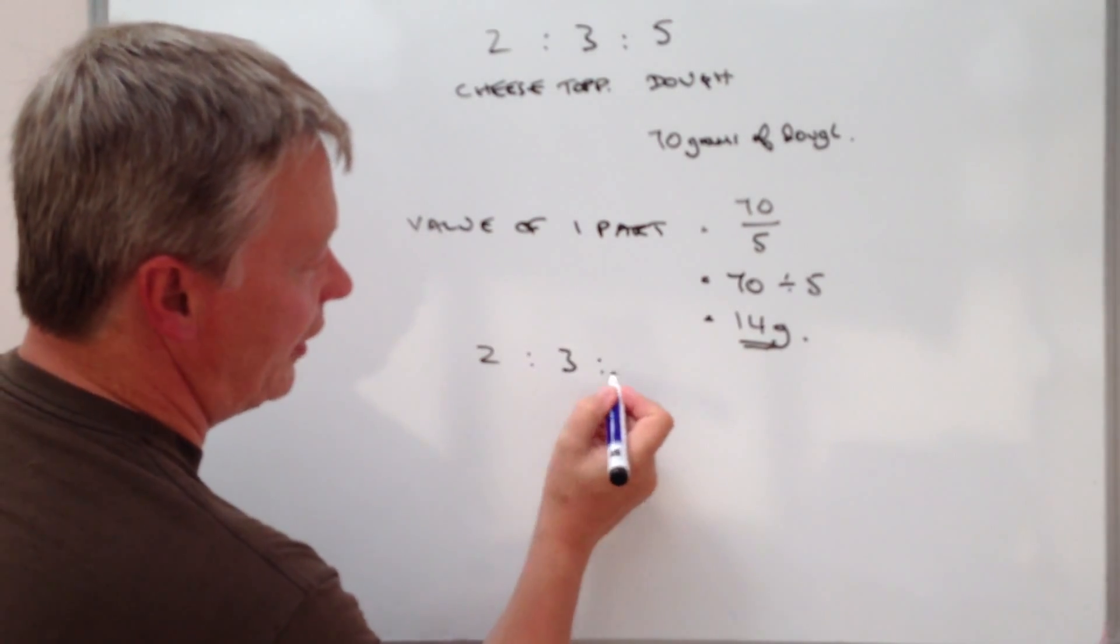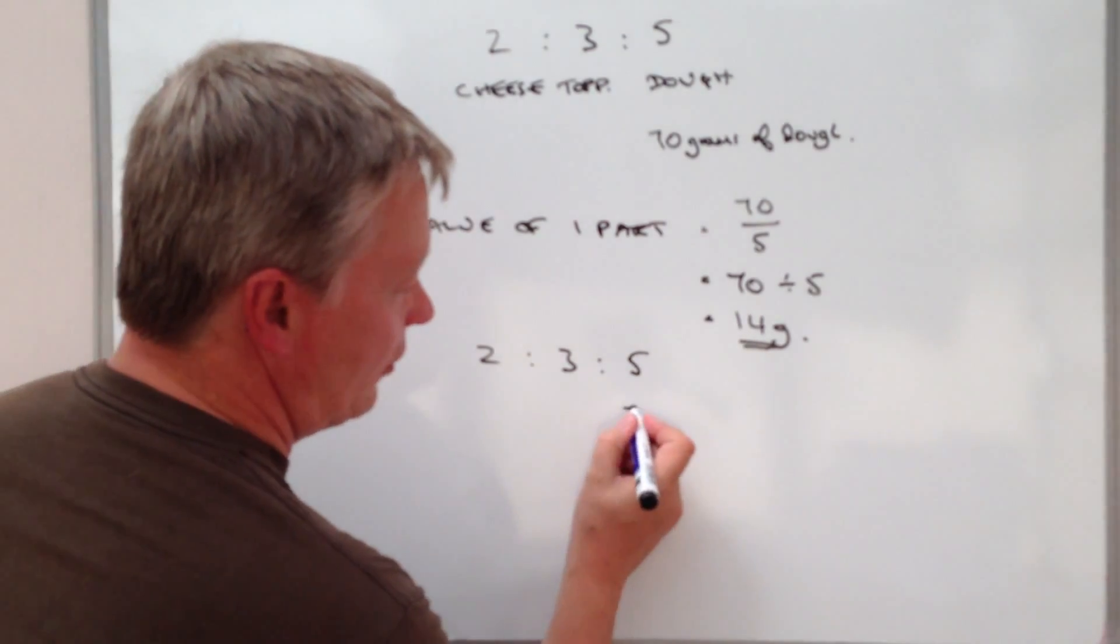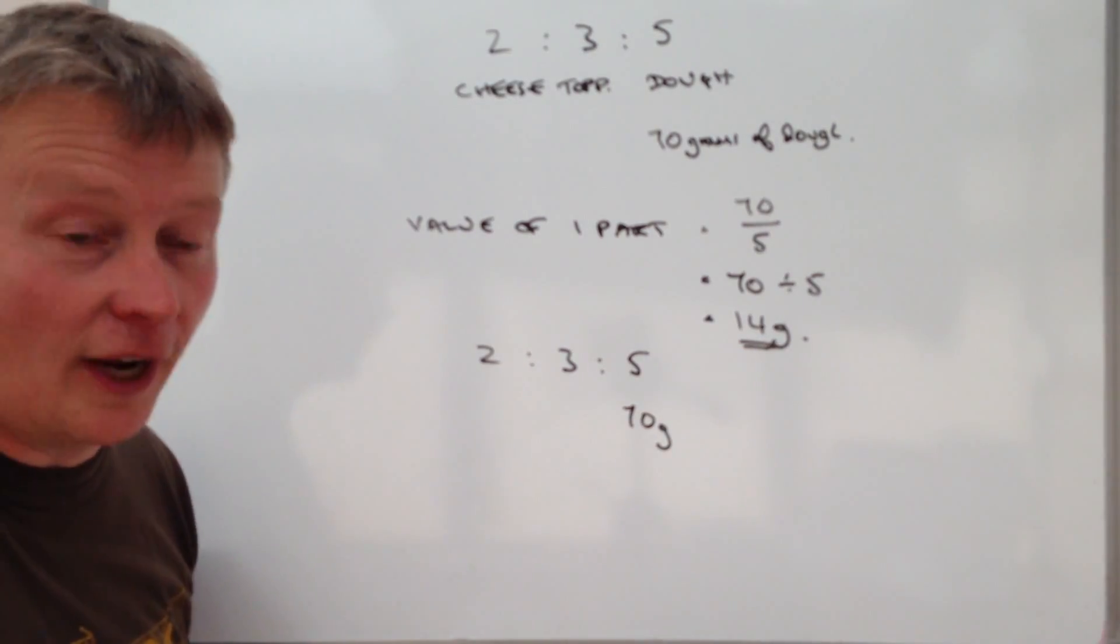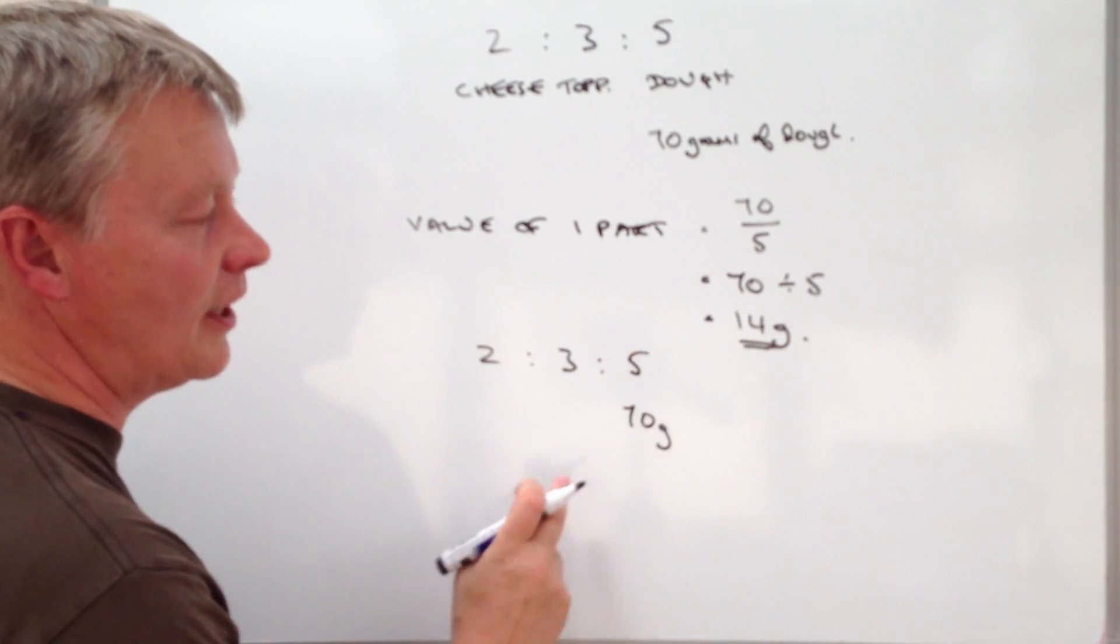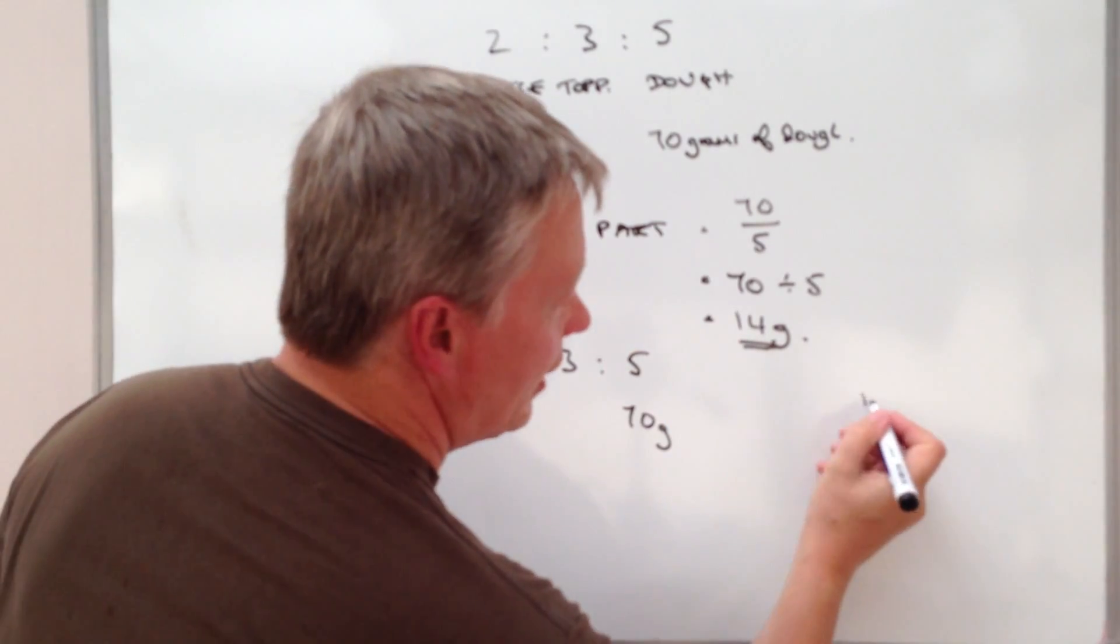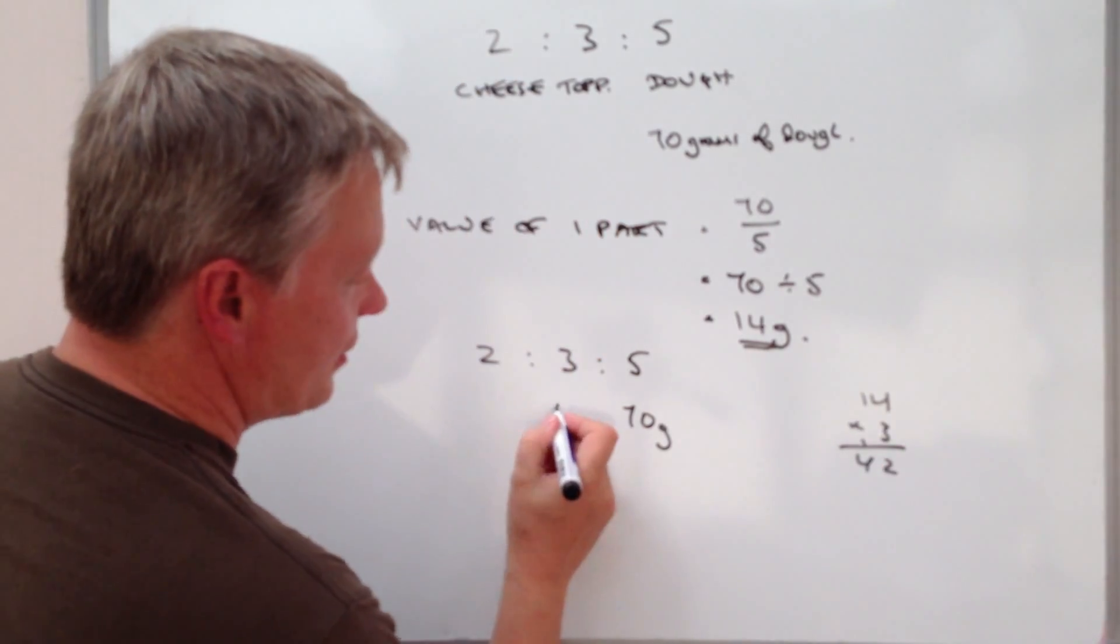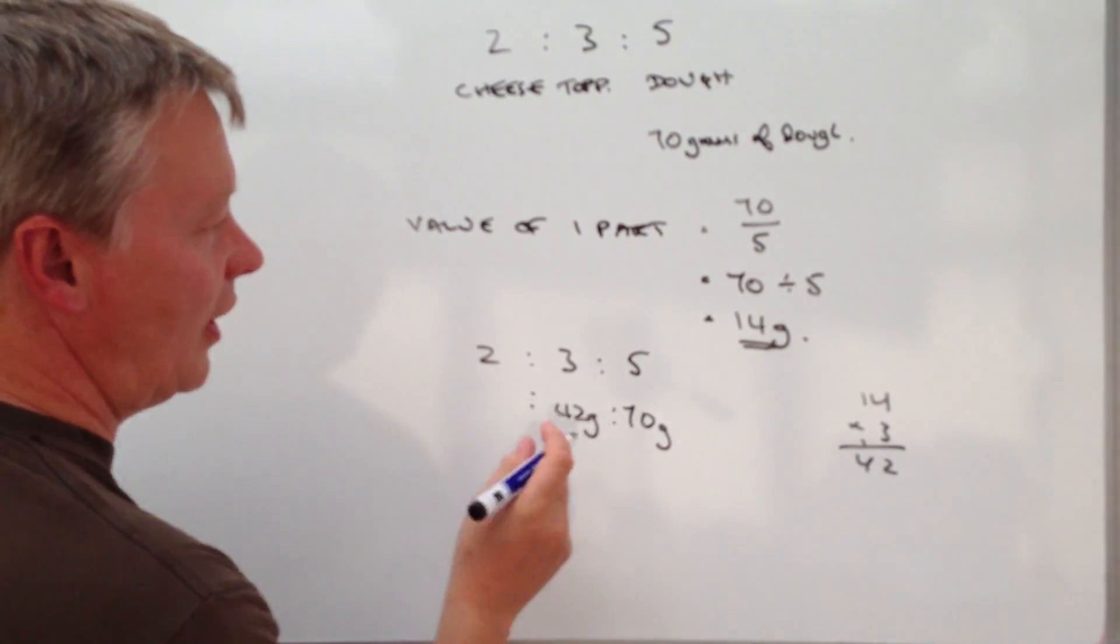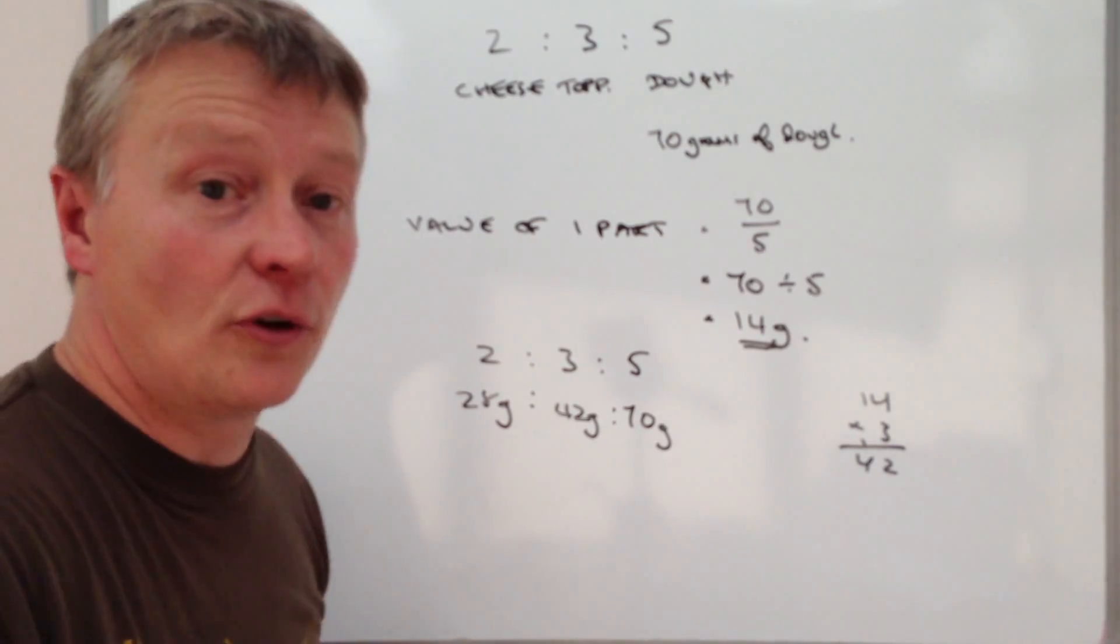So let's just put that up on the board. We're sharing in the ratio two, three to five. We know this is 70 grams, and we also know that each part is 14 grams. So for the topping, it will be three times 14. We're going to work that out on the side here. So that's going to be 42 grams, and two grams of cheese is going to be 28 grams.